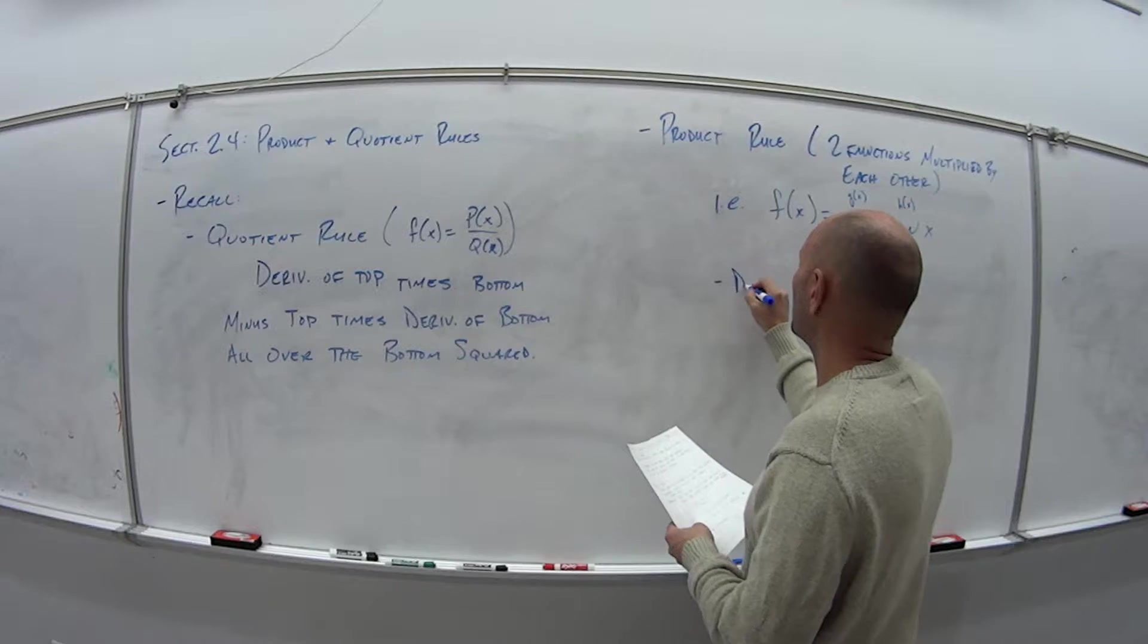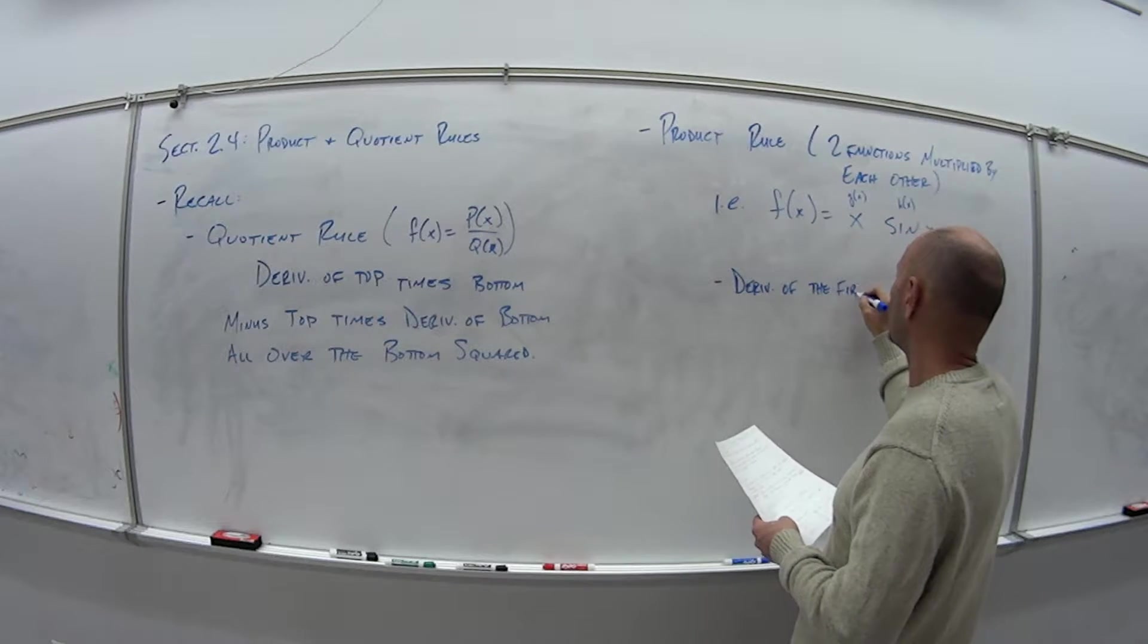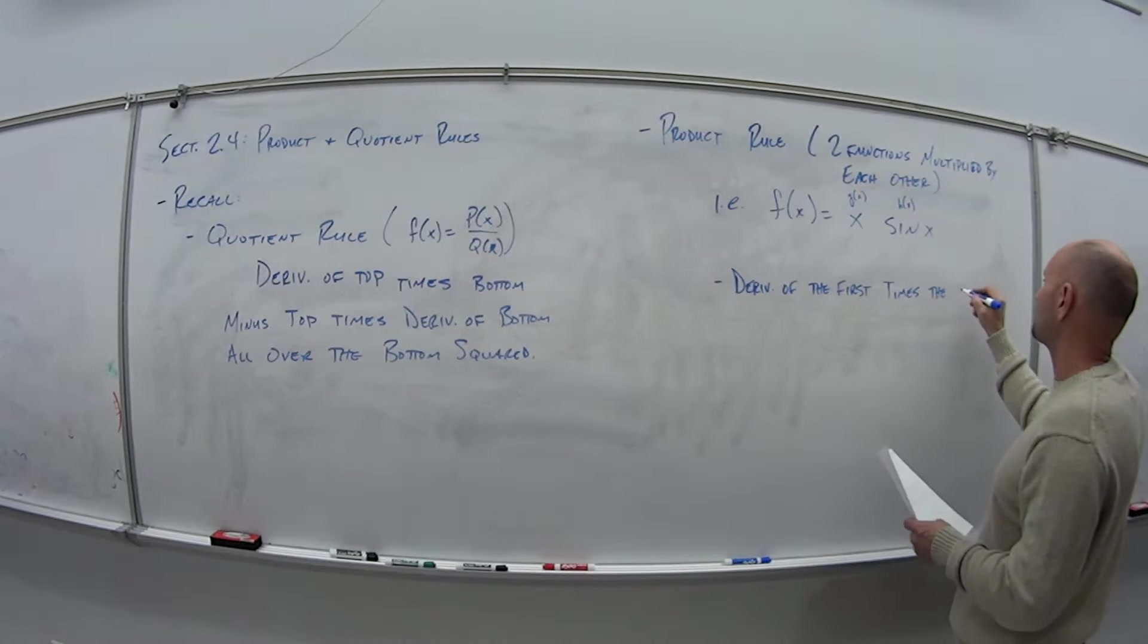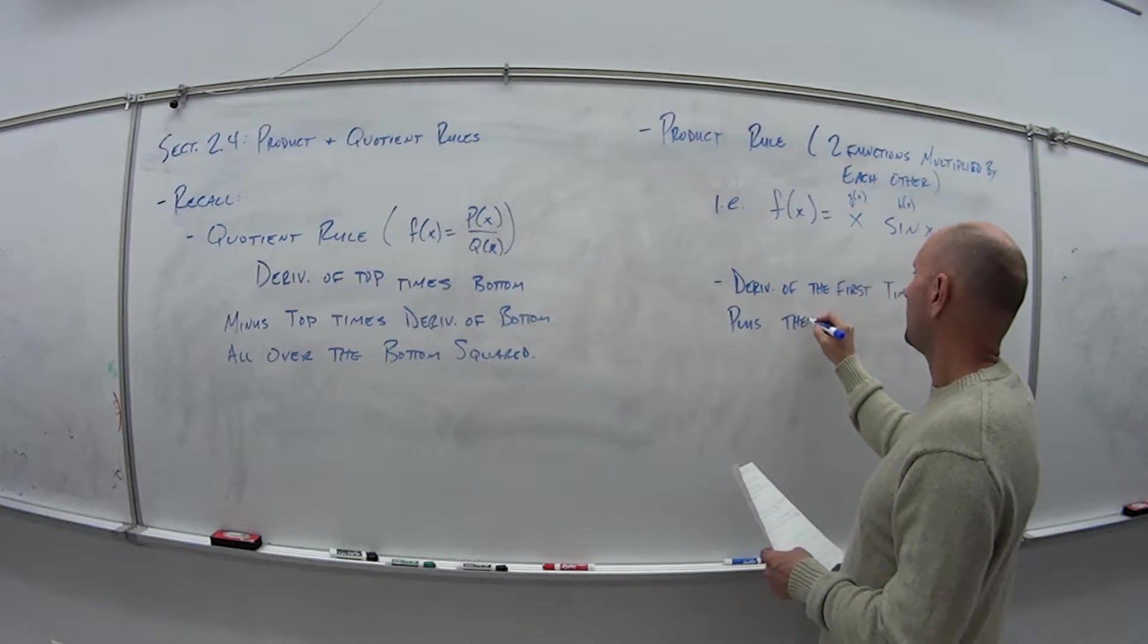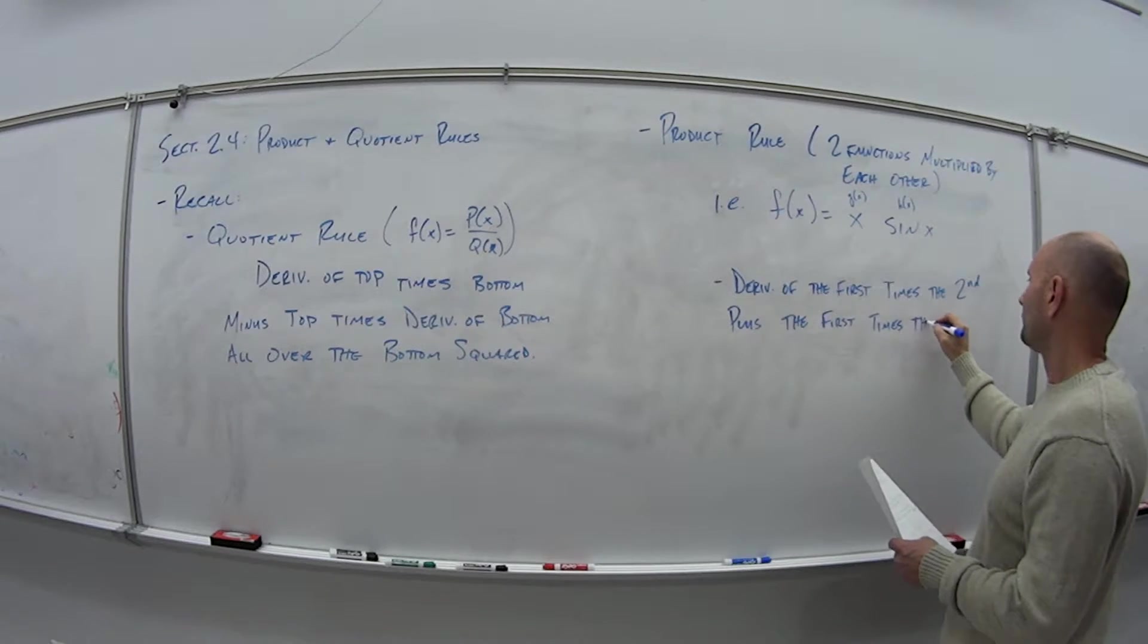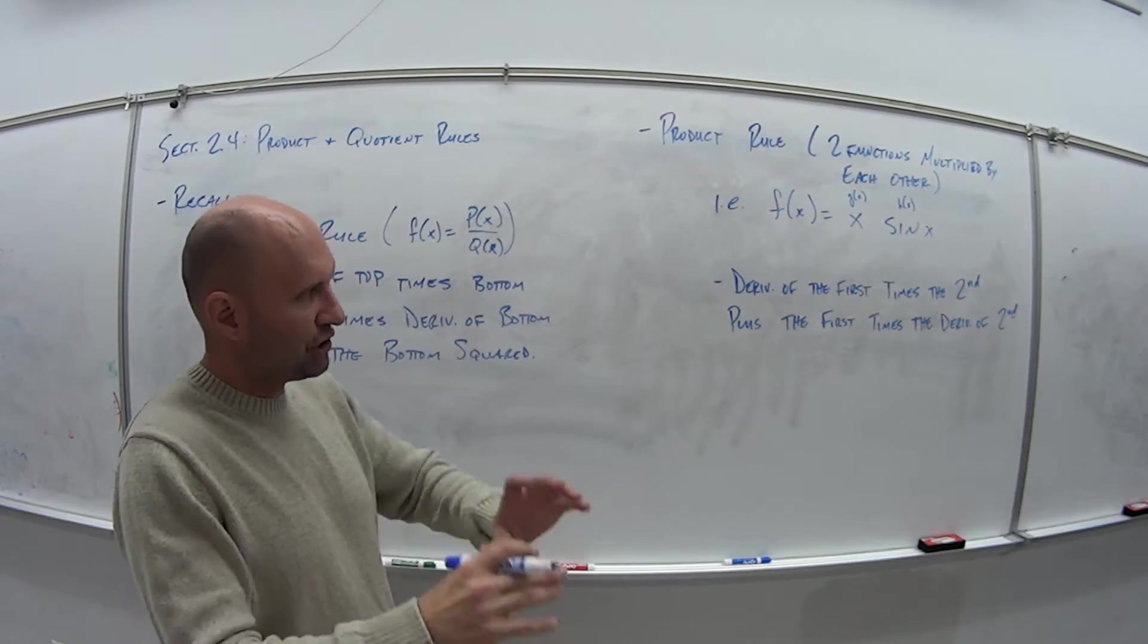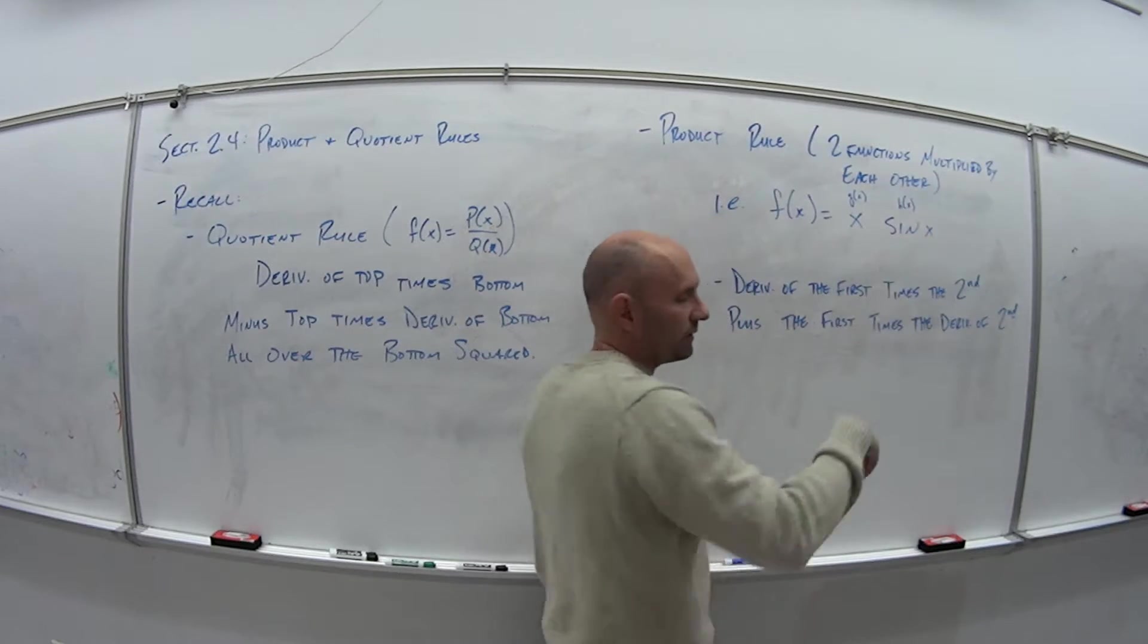So the product rule, the verbiage is as follows. It is the derivative of the first times the second, and by first and second I'm talking about functions. So the derivative of the first function times the second function plus the first times the derivative of the second. So there is no denominator, so we don't have to worry about all over bottom squared, any of that. It's just a lot more straightforward. Take the derivative, multiply it by this, add it to this times the derivative of the second piece.